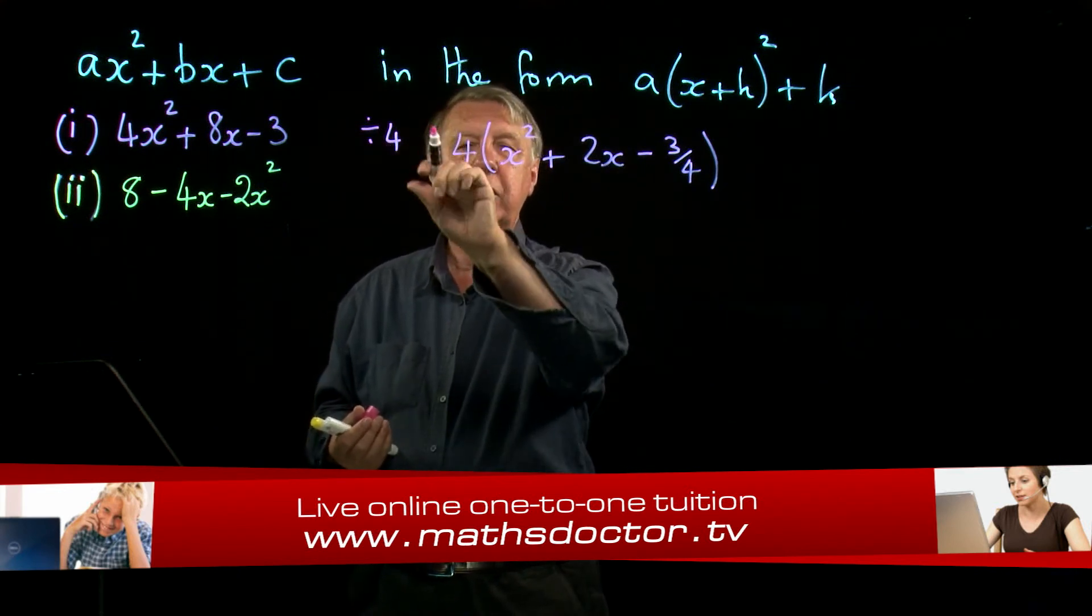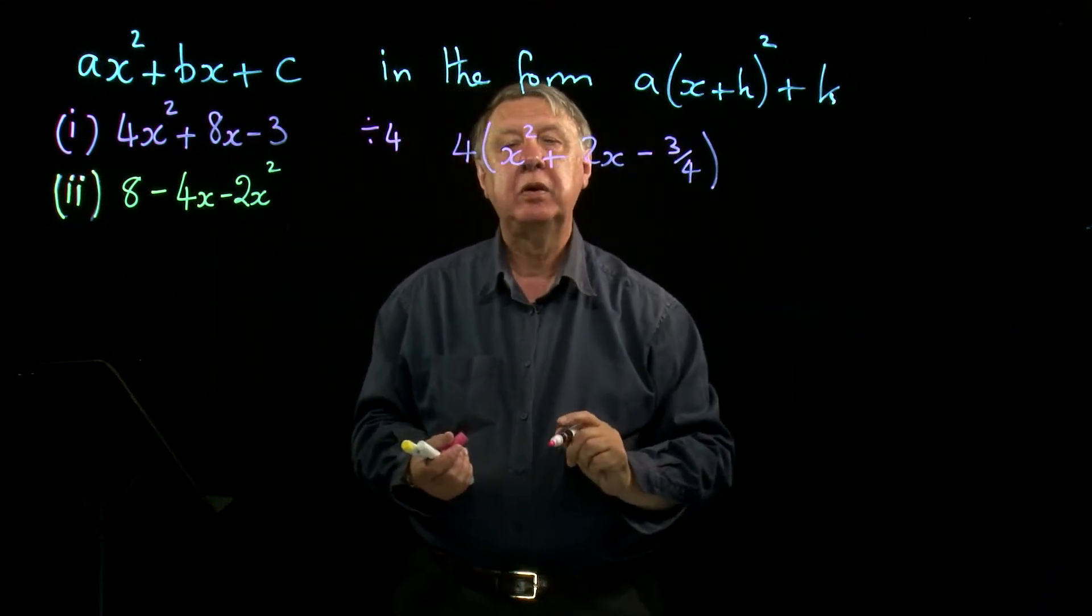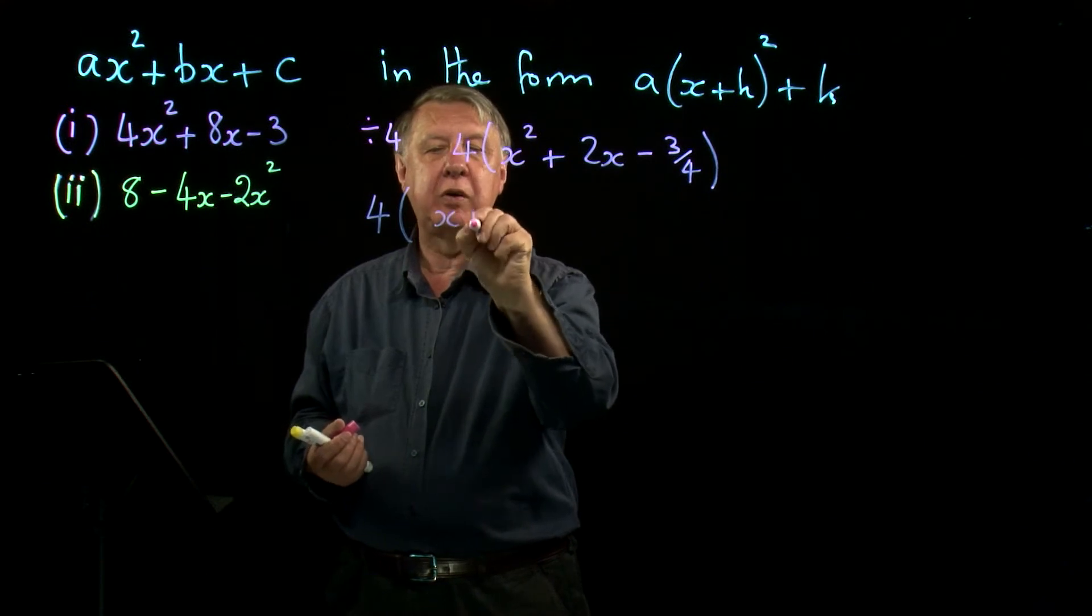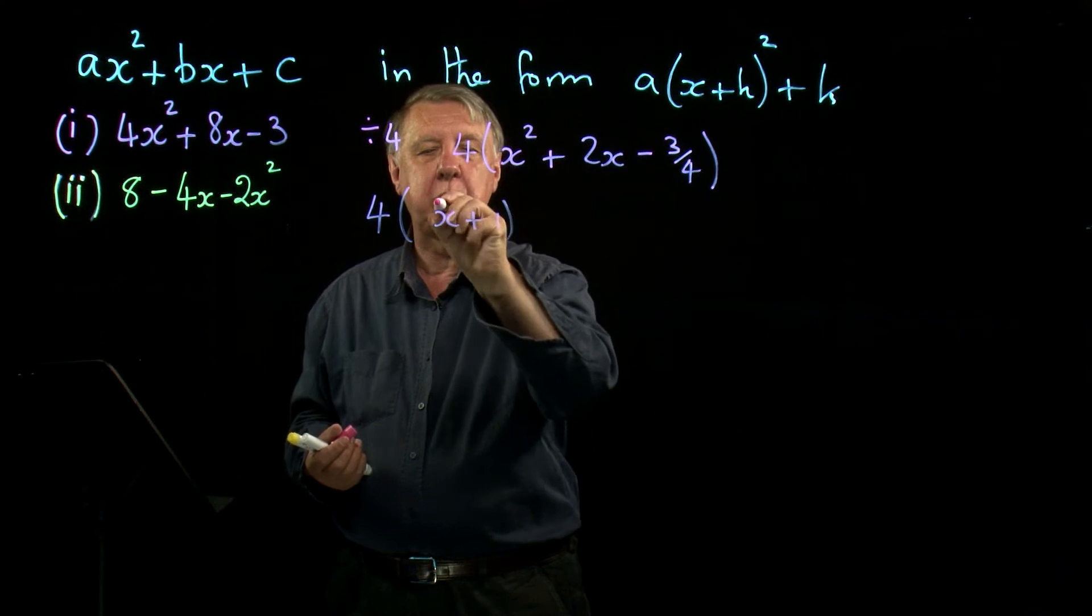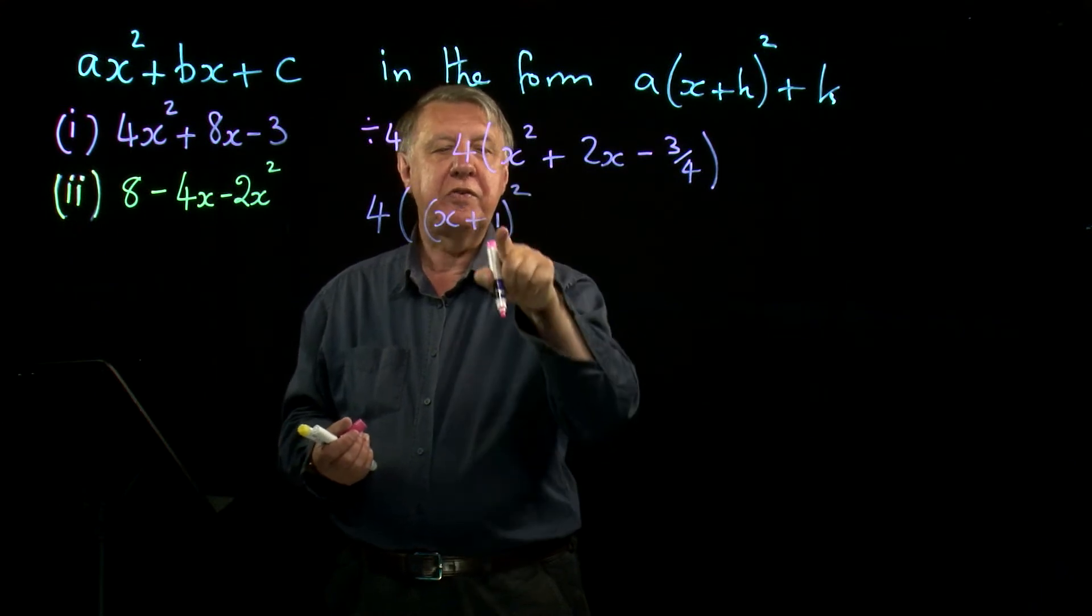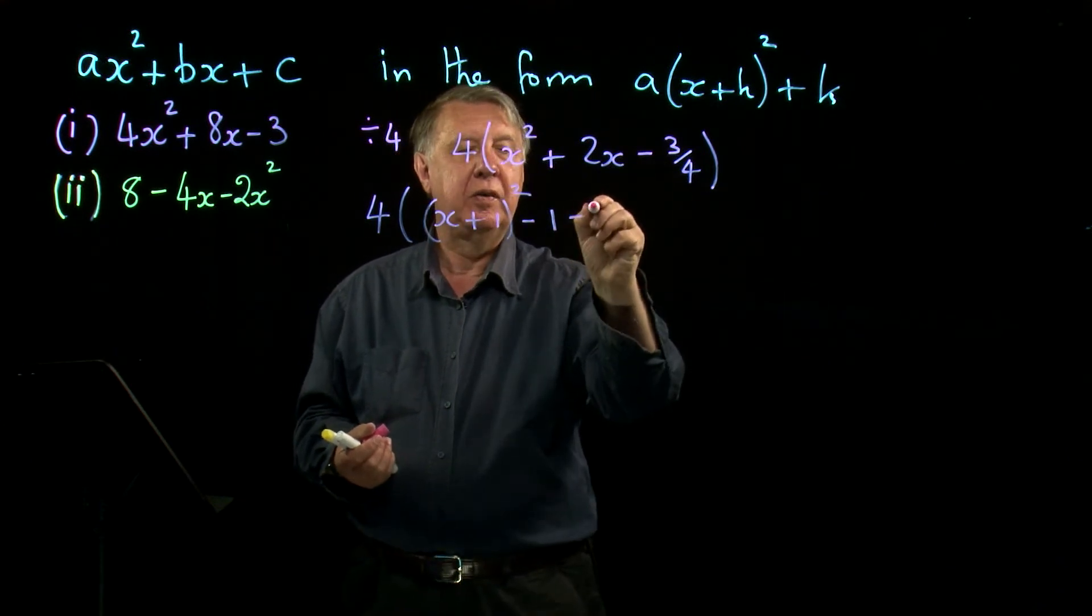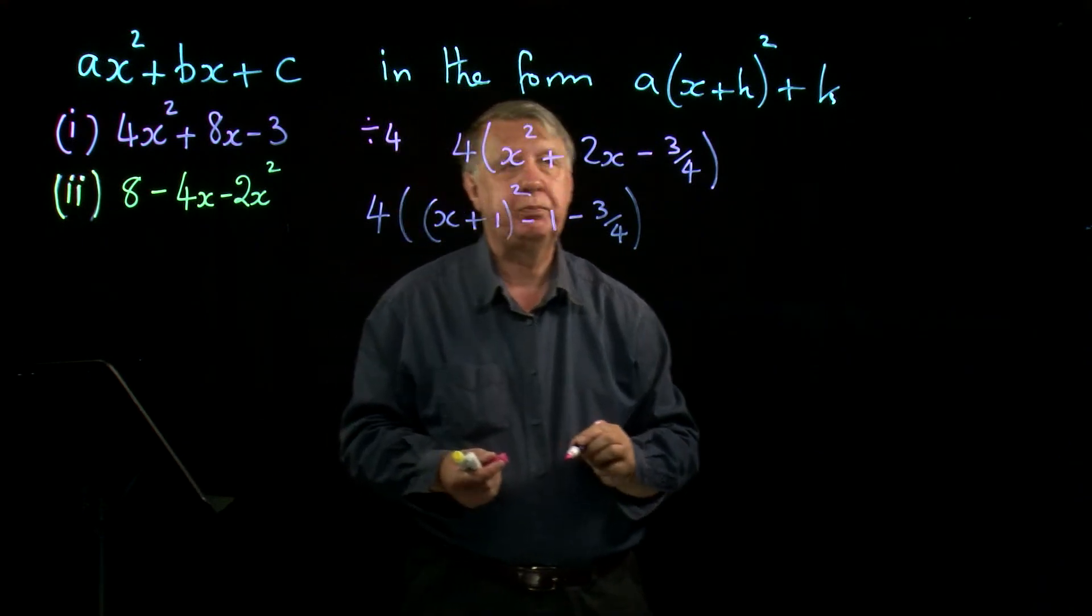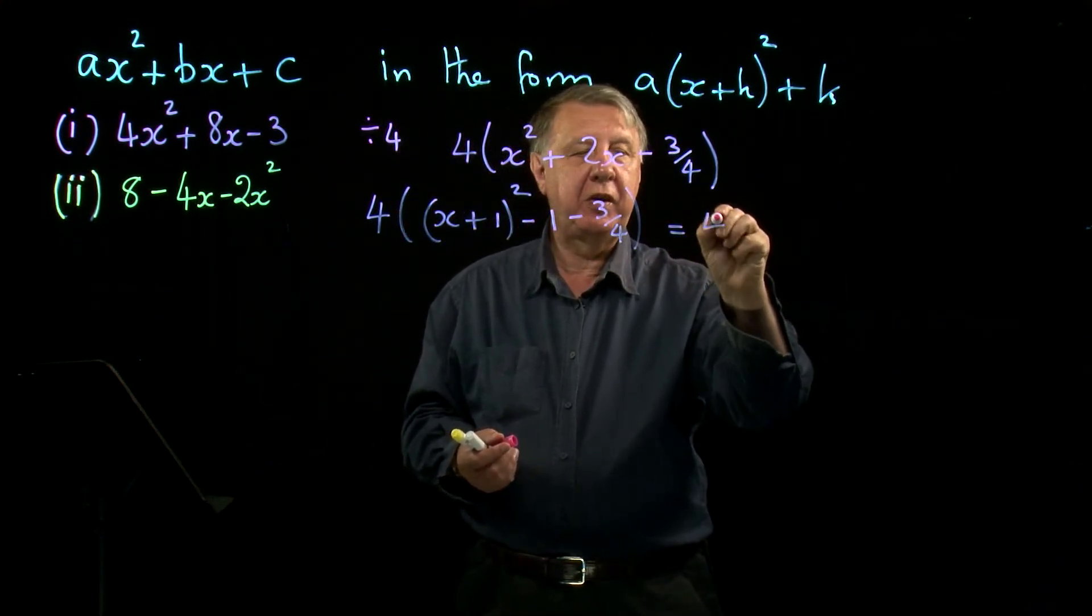If we ignore the four, we have the standard method. We know how to deal with that. We have the number of x's - now there are 2x's, so we have that which is one. We square that one and we take it away again together with the negative three quarters.